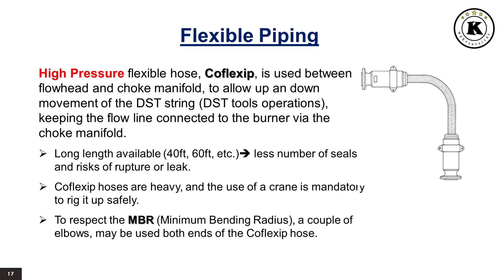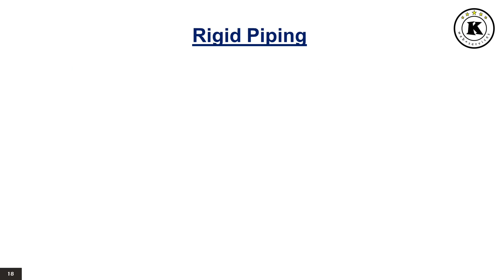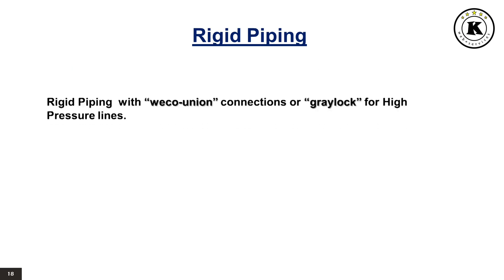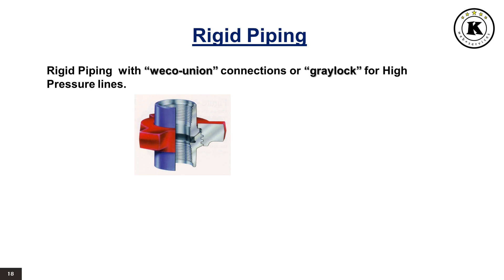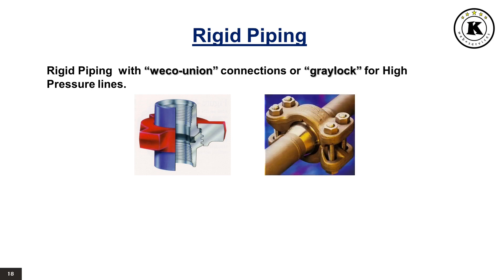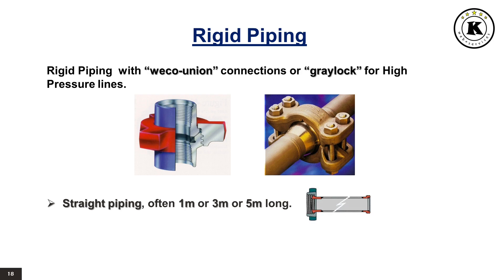Rigid Piping: Rigid piping is generally ended with Weco Union connections, or Greylock for high-pressure lines. Generally, straight piping sections are often 1 meter, 3 meters, or 5 meters long. Elbows are often 90 degrees.